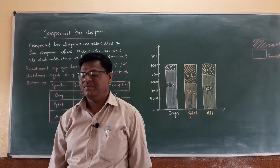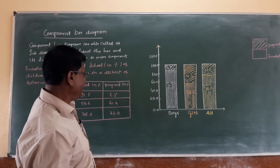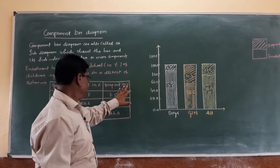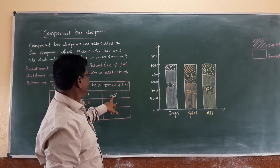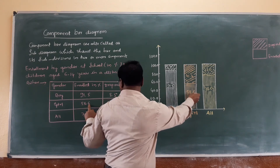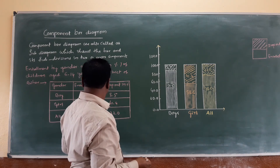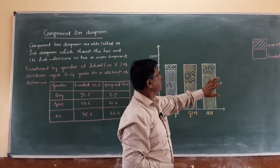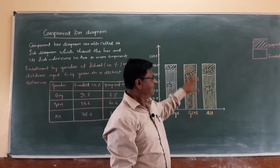If you have any problem with how to draw the component bar diagram, the bar diagram is based on this chart: boys enrollment is 91.5% and dropout is 8.5%; girls enrollment is 58.6% and dropout is 41.4%; and for all, enrolled is 78.0% and dropout is 22.0%. You have to learn the component bar diagrams.